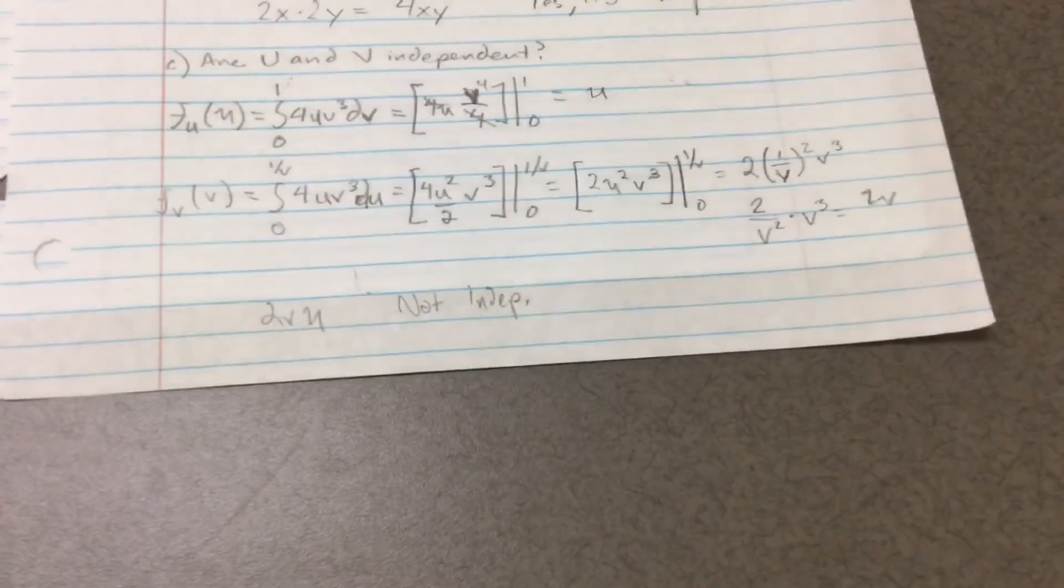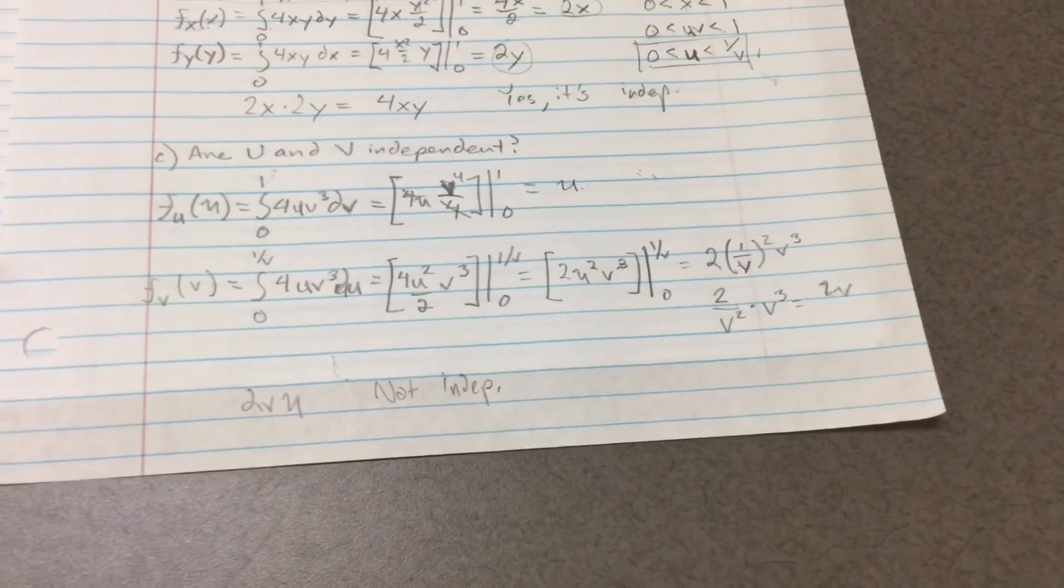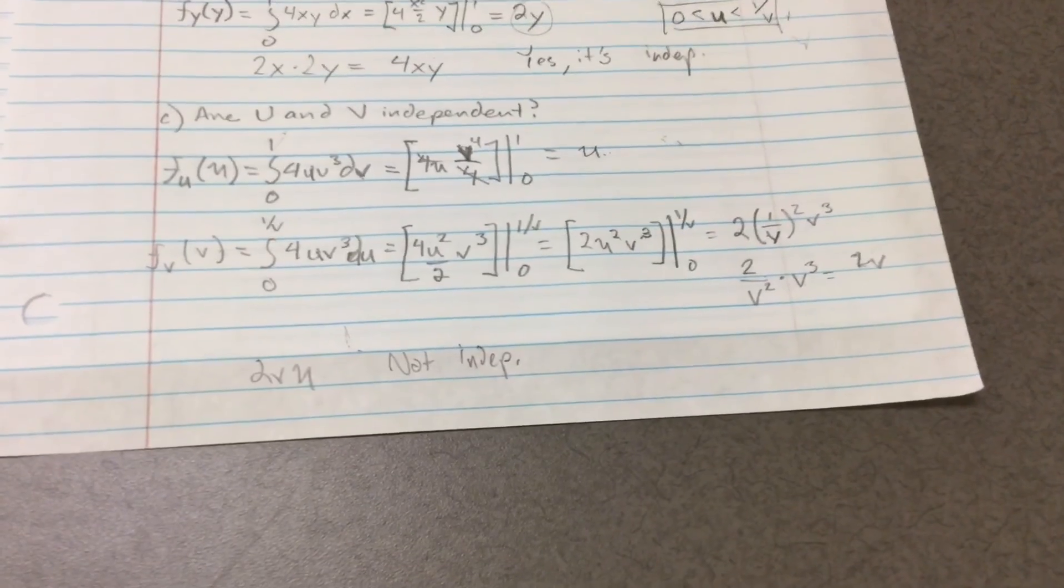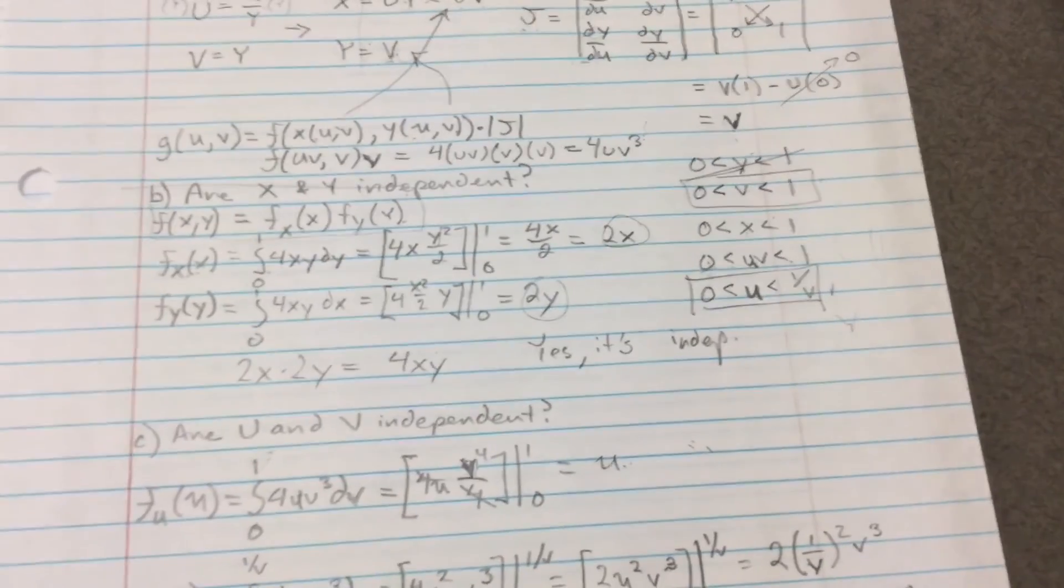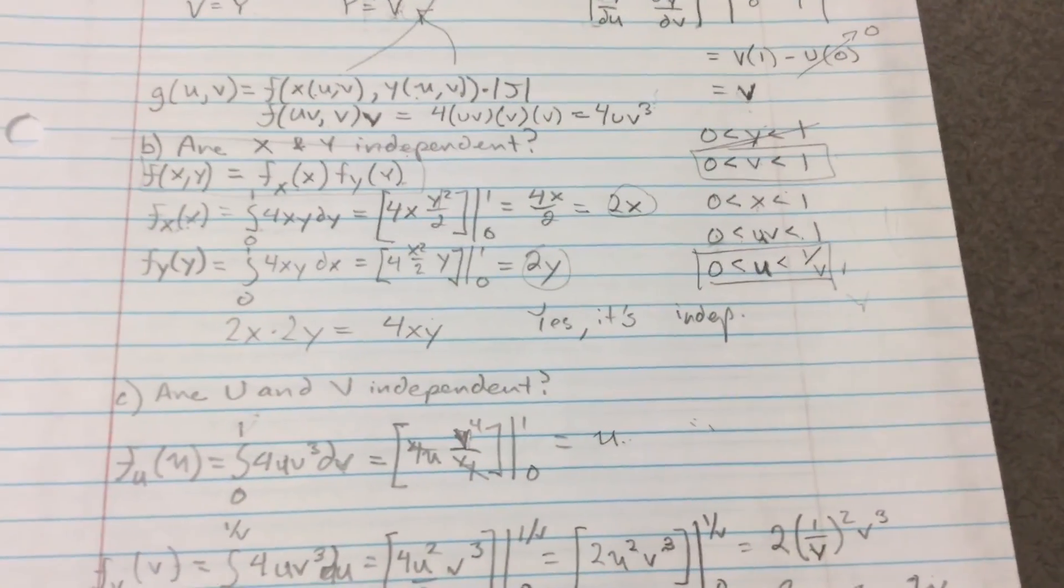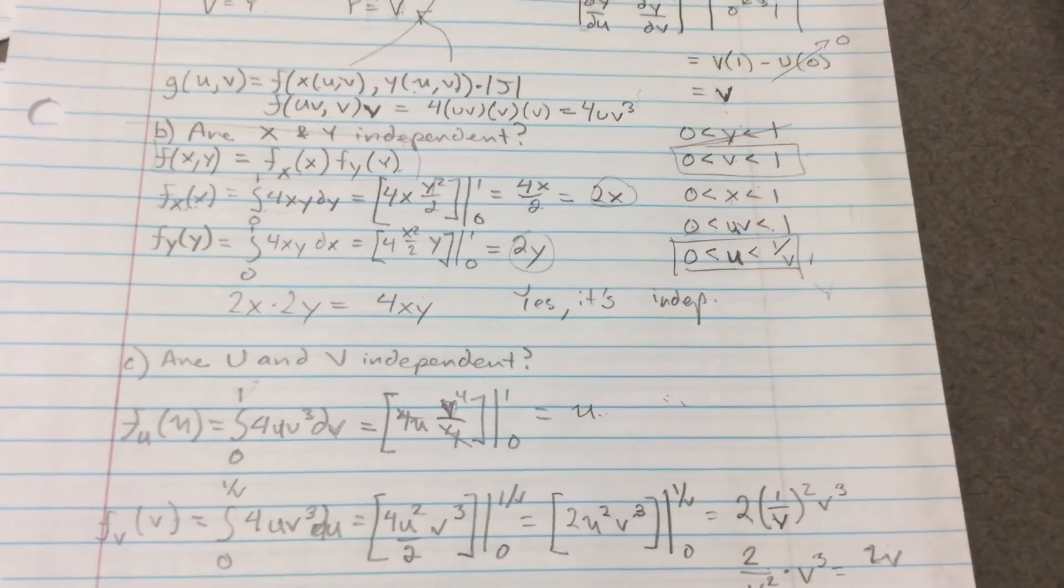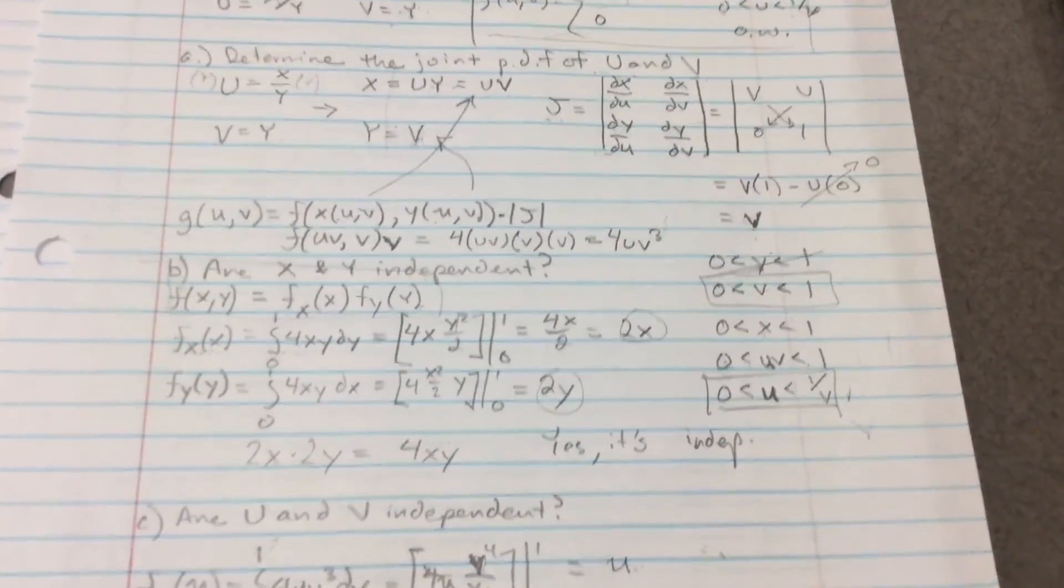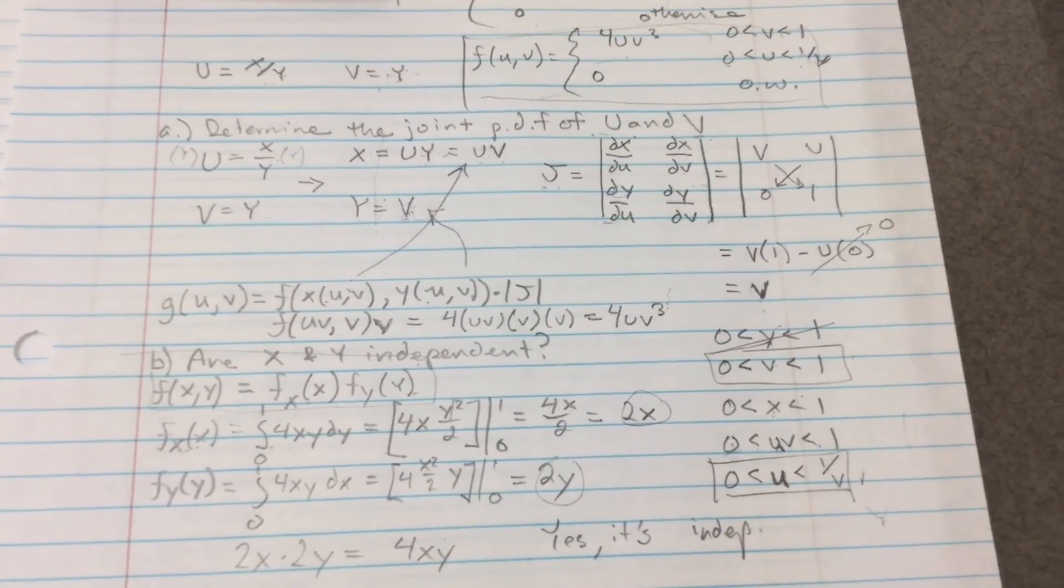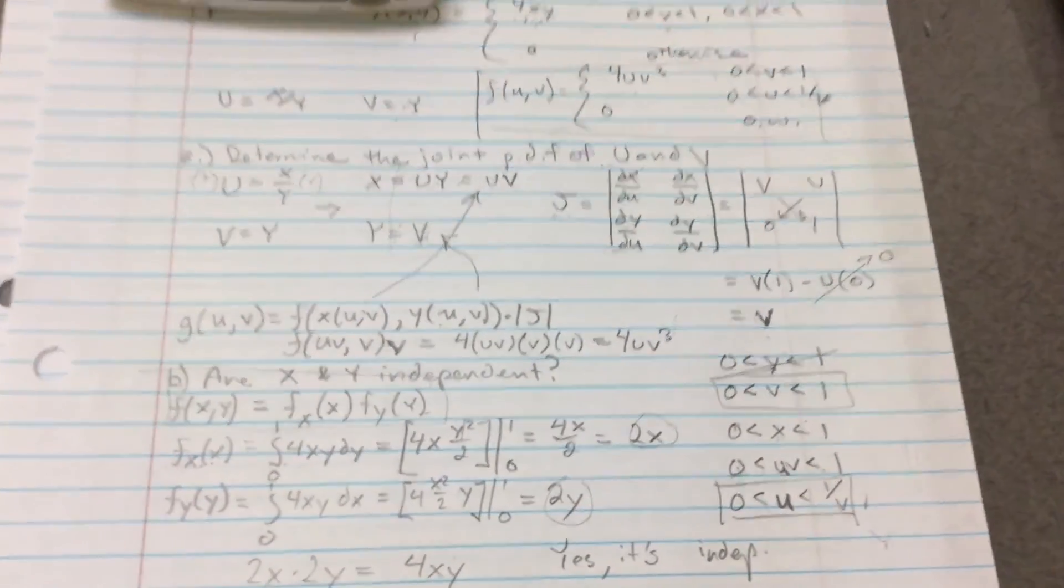So, overview of the problem. We found the marginals of U and V. And we wanted to determine whether or not they're independent. So we multiplied the resulting values U and 2V together. And we determine that they're not independent. Part B, with respect to X and Y, whether or not they're independent. We determine the marginals of X and Y. And we multiply them together. And we found out that it's equal to 4XY. Which is indeed equal to the joint PDF of X and Y. So it is independent. Part A, we determine the joint PDF of U and V, which came in use later in Part C. So that's that for this tutorial.